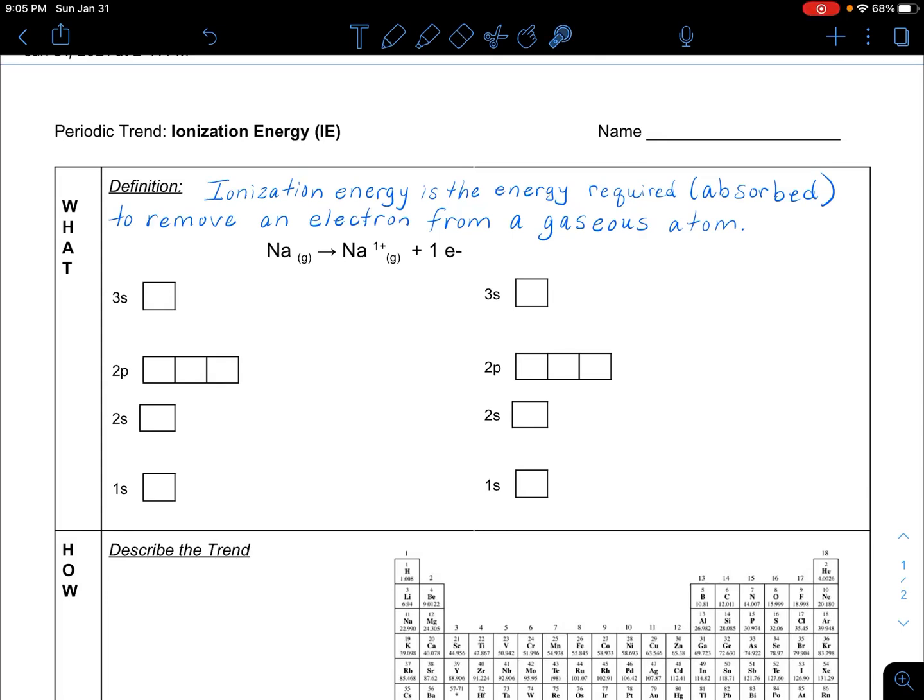In a previous video, I went over the periodic trend or periodicity trend of atomic radius. In this video, I'm going to go over the second most common periodic trend, which is ionization energy. If you'd like a copy of this Google Doc that I'm taking notes on, go to the description below in this YouTube video and click the link. It'll force you to make a copy and you'll have one for your own. So let's get started.